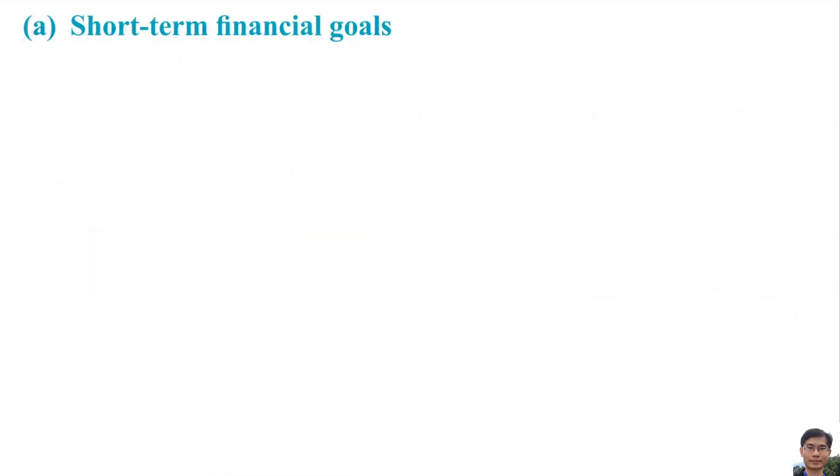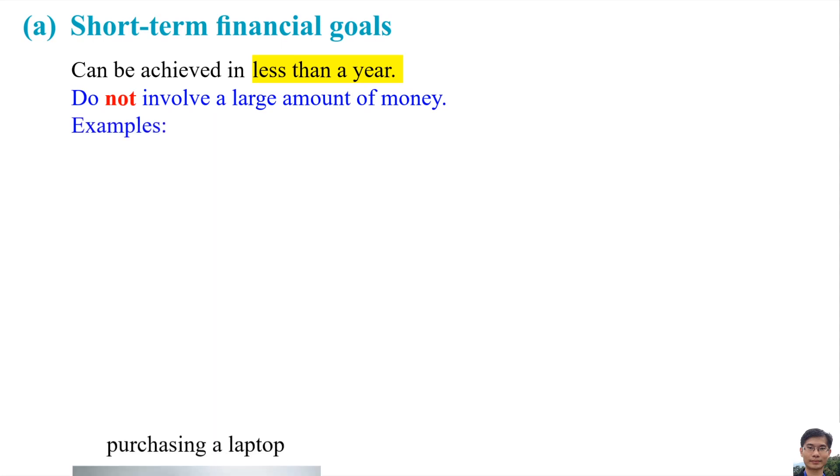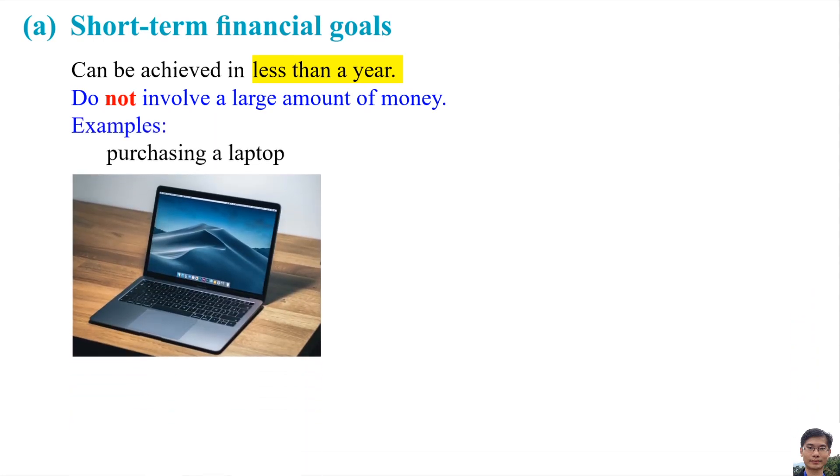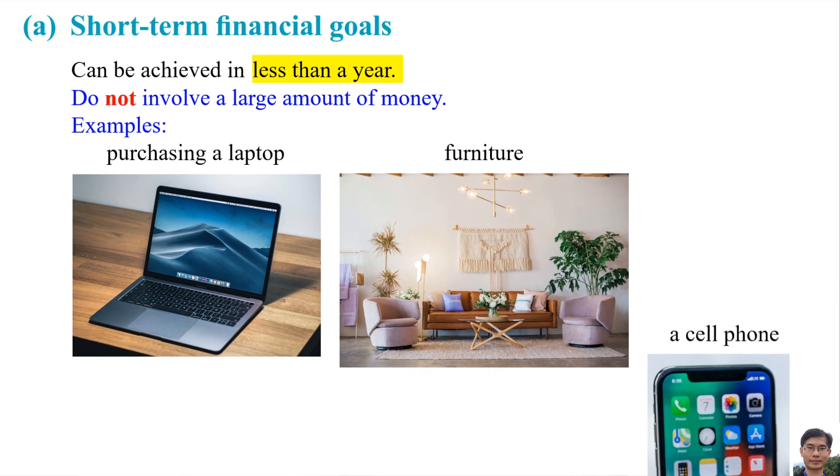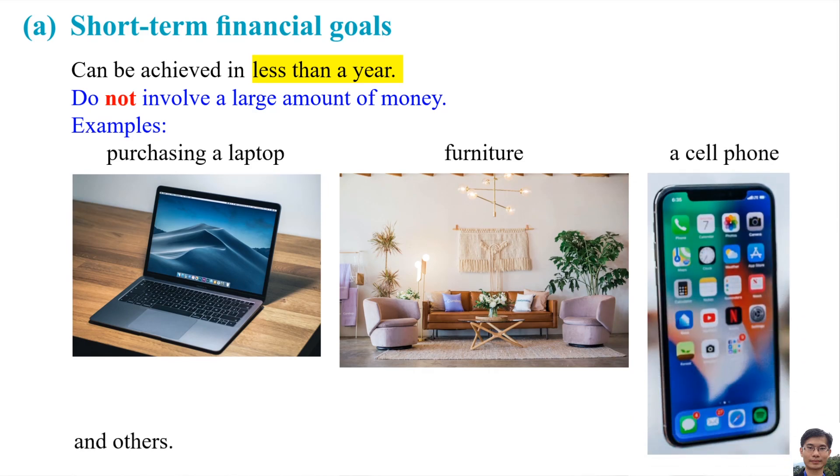There are two types of financial goals. The first is short-term financial goals. The short-term financial goals can be achieved in less than a year, do not involve a large amount of money. The examples of short-term financial goals are purchasing a laptop, furniture, a cell phone, and others.